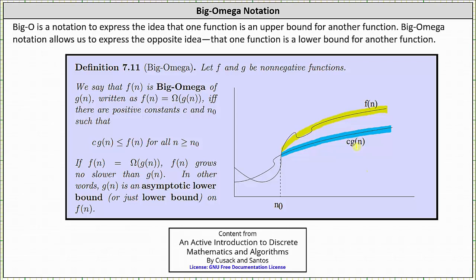And now looking at the formal definition, let f and g be non-negative functions. We say that f of n is big omega of g of n, written as f of n equals big omega of g of n, if and only if there are positive constants c and n sub zero such that c times g of n, this lower function, is less than or equal to f of n, this upper function, for all n greater than or equal to n sub zero. If f of n is big omega of g of n, f of n grows no slower than g of n. In other words, g of n is an asymptotic lower bound, or just a lower bound, on f of n.